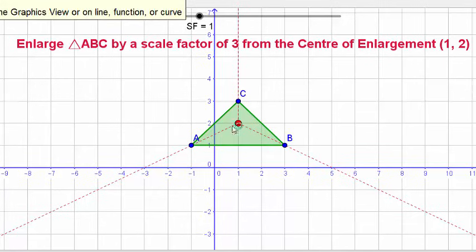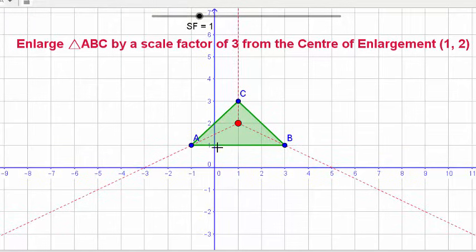In the same way as before, let's go from the center of enlargement to A. It's one down and two across. We're going to multiply that by three. So rather than one down, it's going to be three down - one, two, three - and rather than two across, multiply by three, so six across - two, four, six. You can see it's exactly on the construction line, perfect. We'll label that A dash.